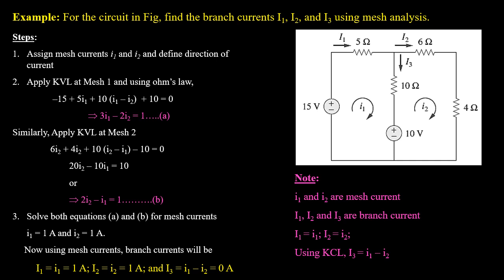In the given example circuit, we need to find branch currents capital I1, I2, and I3 using mesh analysis. First, we identify the meshes — this circuit has two meshes — and we assign small i1 and small i2 as mesh currents, defining their direction. As the second step, we apply KVL to each mesh and transform the KVL equations into terms of mesh currents with the help of Ohm's law.